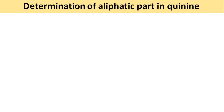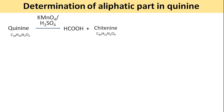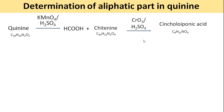Determination of the aliphatic part in quinine was one of the toughest parts, involving much thinking and experimentation. Quinine upon permanganate oxidation gave ketanine and formic acid. Ketanine upon chromic acid oxidation gave synchaloponic acid — through repeated degradations, this important molecule provided a way to determine the aliphatic part of quinine.